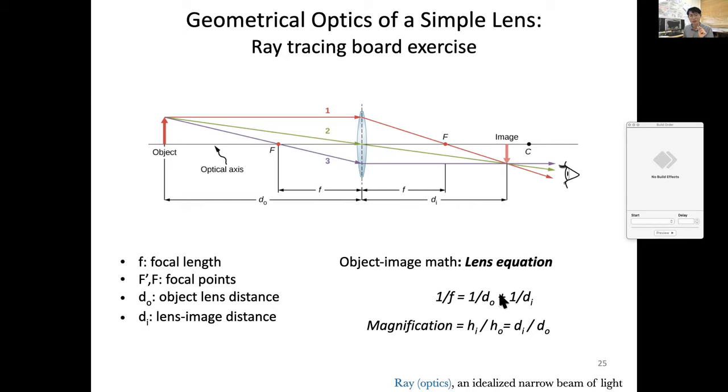So if object is somehow twice farther from the focal length, then the image should be twice farther from the lens. Does it make sense? And in fact, from this image, what if this d sub o is in fact smaller than f.